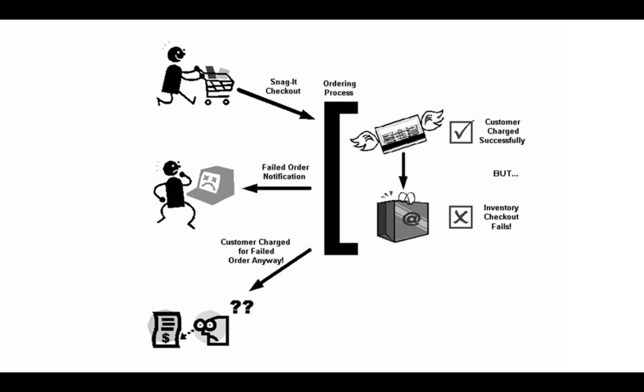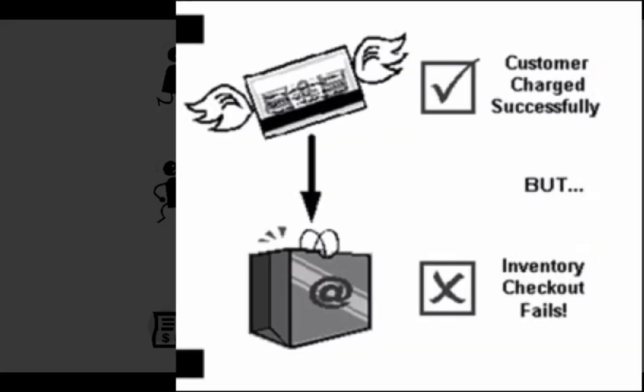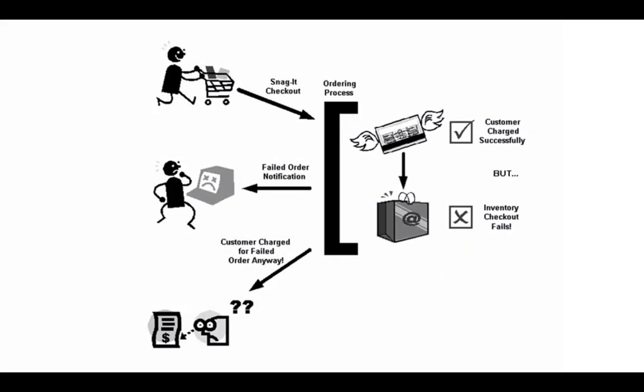You can see on the right side, in your computer system, the customer was charged successfully, but there was an inventory problem and there was no product on the shelf. So you did half the process — that means you charged him — but you didn't do the other half, which means you mailed him the package. So that would be a real problem, and we're trying to avoid that in our application.